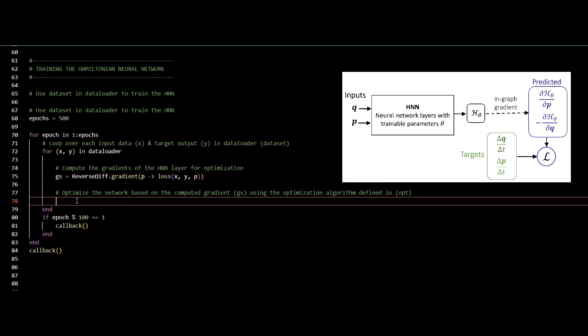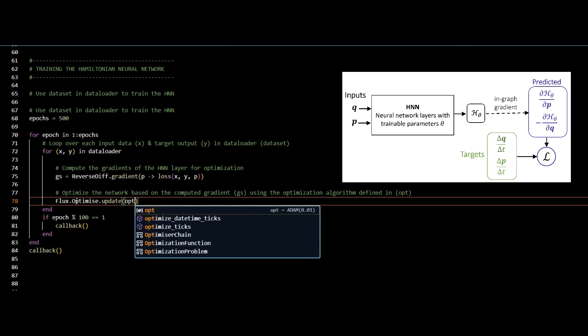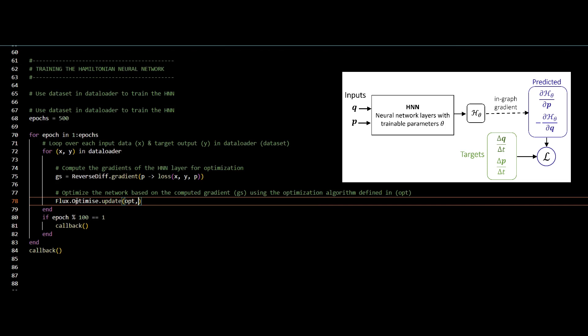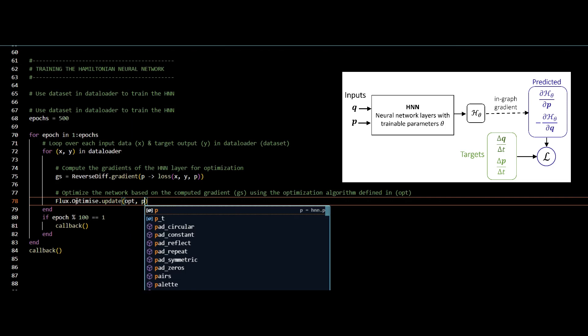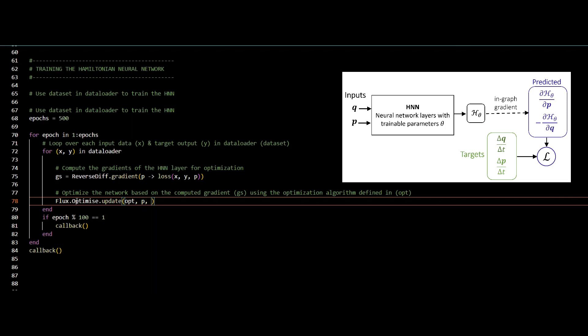I will then optimize my network based on the computed gradient, which differentiates the Hamiltonian network from different architectures. Opt is my optimization algorithm, which is Adam. P is my inputs. GS is my gradients.